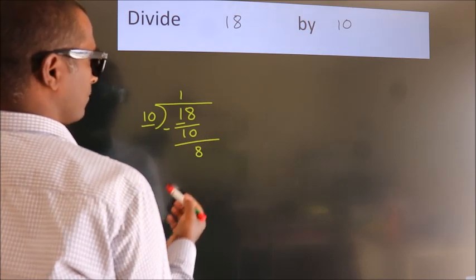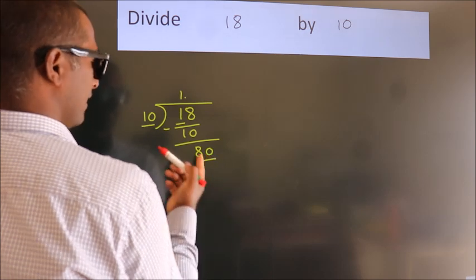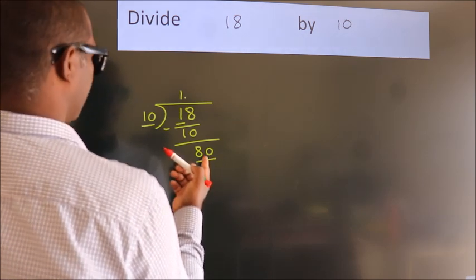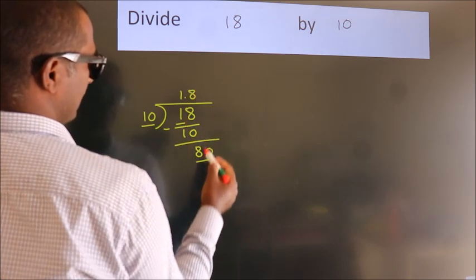So what we do is put a dot and take 0. So, 80. When do we get 80? In the 10 table, 10 times 8 is 80.